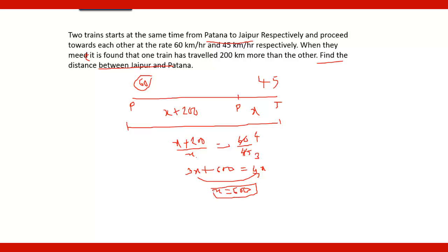So x is 600 km. This distance is 600 km. Then the other distance will be 600 plus 200, which equals 800 km. And the total distance will be 800 plus 600, which equals 1400 km. So the total distance is 1400 km.